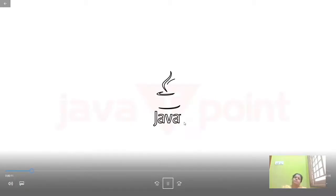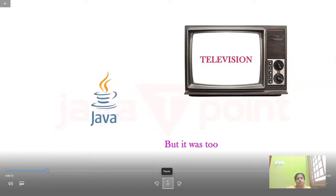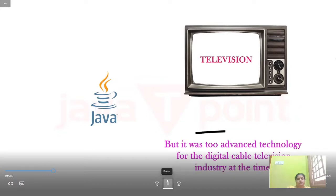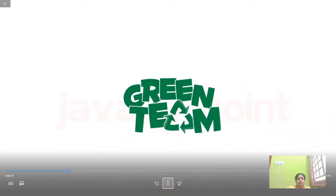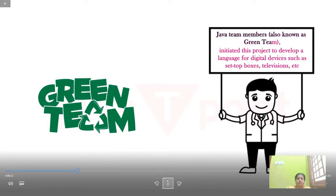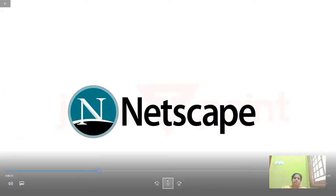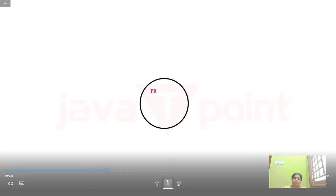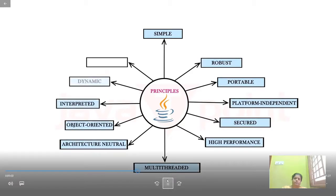Today we'll learn about the history of Java. The history of Java is very interesting. Java was originally designed for interactive television, but it was too advanced for the digital cable television industry at the time. The history of Java starts with the Green Team. Java team members initiated this project to develop a language for digital devices such as set-top boxes and televisions. Later, Java technology was incorporated by Netscape. The principles for creating Java were: simple, robust, portable, platform-independent, secured, high-performance, multi-threaded, architecture-neutral, object-oriented, interpreted, dynamic, and distributed.